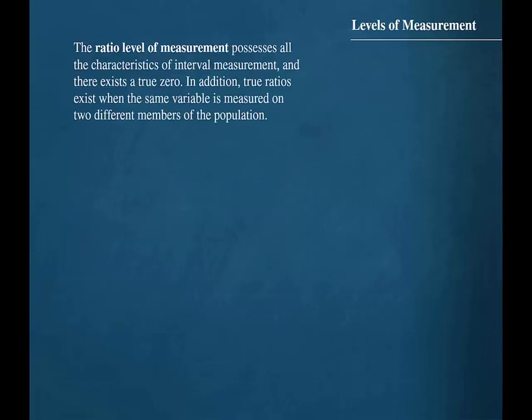The ratio level of measurement possesses all the characteristics of interval measurement and there exists a true zero. In addition, true ratios exist when the same variable is measured on two different members of the population.